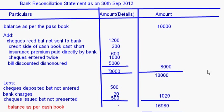To summarize: transactions which increase the cash book balance are added, and transactions which decrease the cash book balance are deducted. Finally, you arrive at the balance as per the cash book. Hope you have understood this. This brings us to the end of this session.